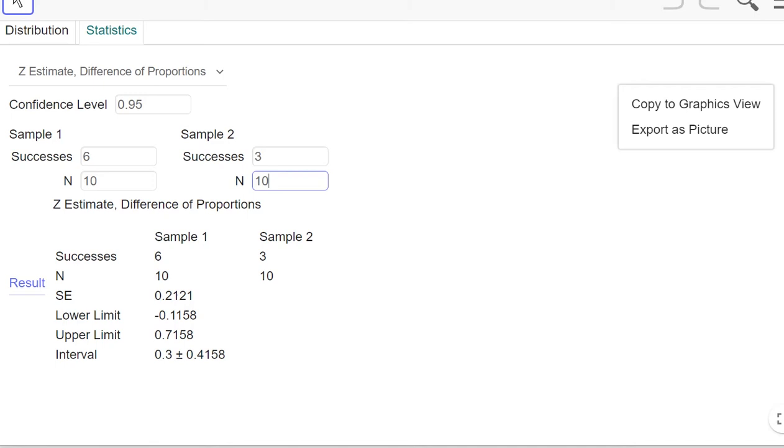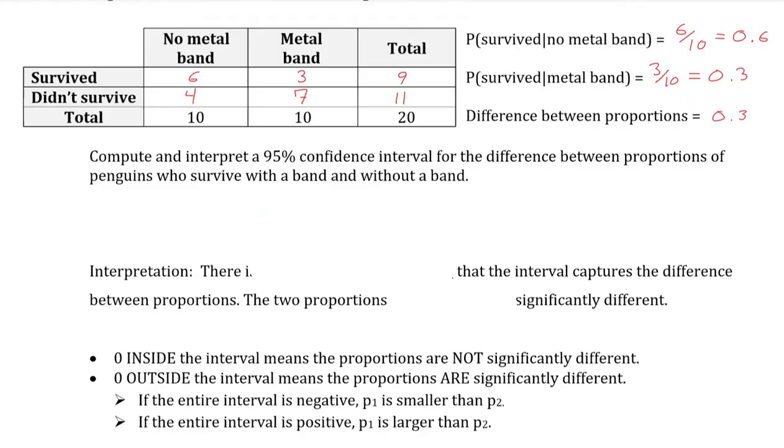That gives our successes and the sample size for each sample, the standard error, as well as the lower and upper limit for the confidence interval. They give negative 0.1158 and 0.7158.